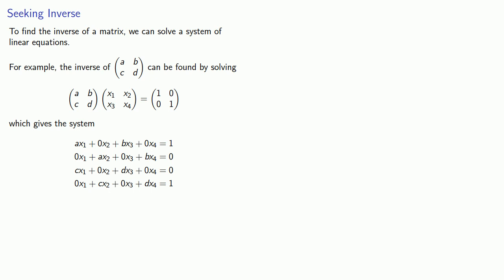Now one of the things we notice about this system is that our variables actually split into two sets. The first and third equations have the variables x1 and x3, but they don't have the variables x2 and x4. That is, the coefficients of x2 and x4 are zero.